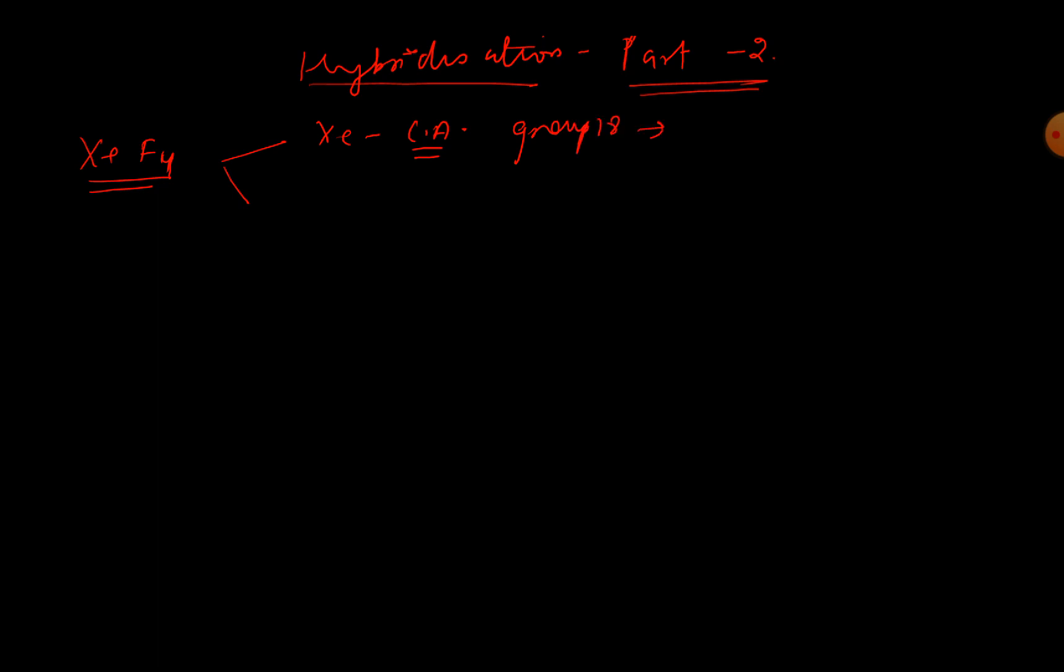You all can see that in this case Xe is the central atom and it belongs to group number 18. Since it belongs to group 18, the valence electrons are 8. So 1, 2, 3, 4, 5, 6, 7, and 8, I've drawn the valence electrons.